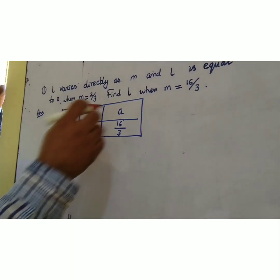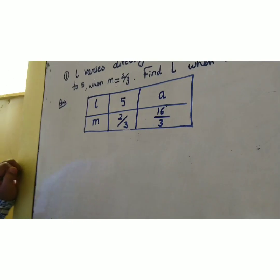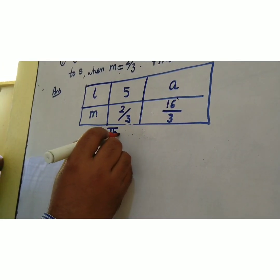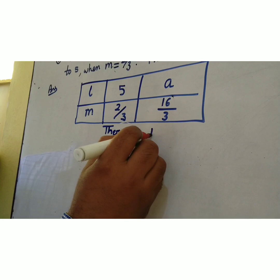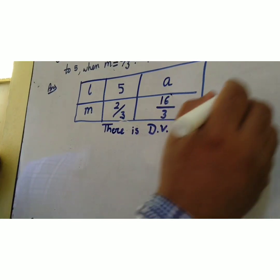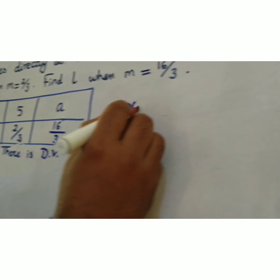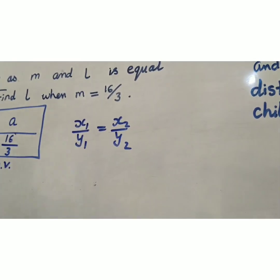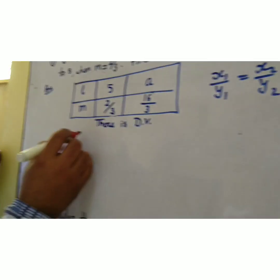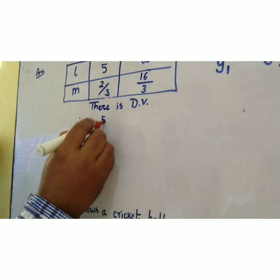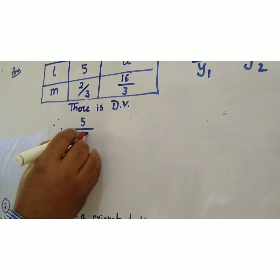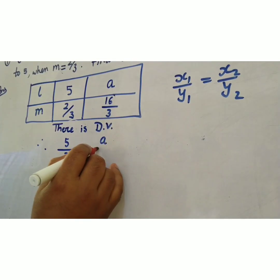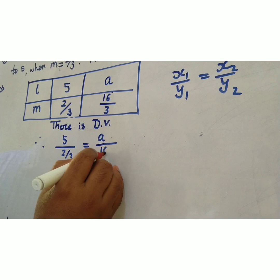We have assumed that the required value of L is A. There is direct variation, and we know that in direct variation x₁/y₁ is equal to x₂/y₂. Therefore, we can write 5 divided by 2/3 is equal to A divided by 16/3.